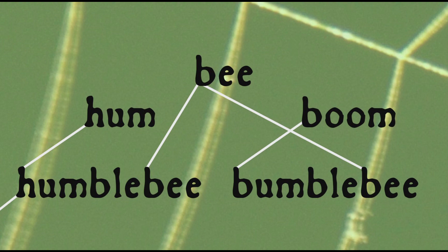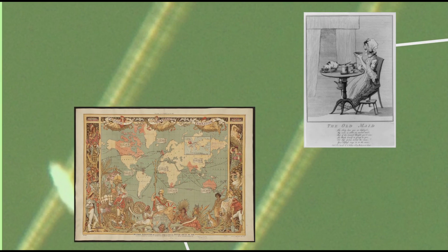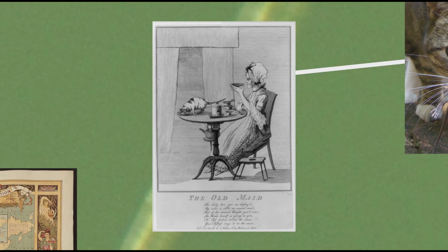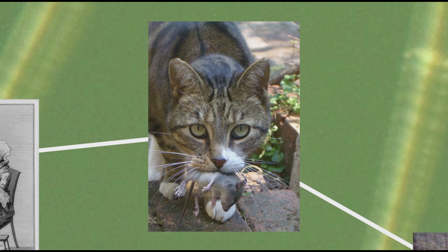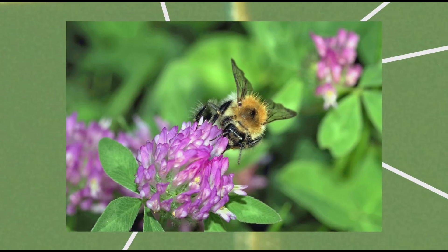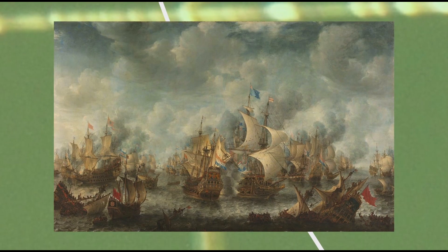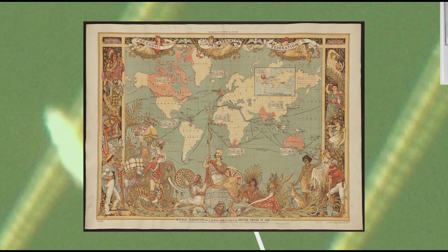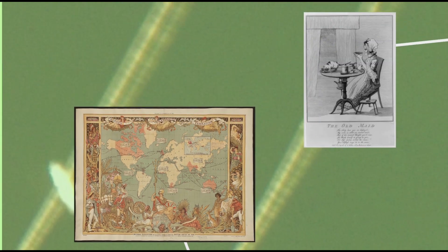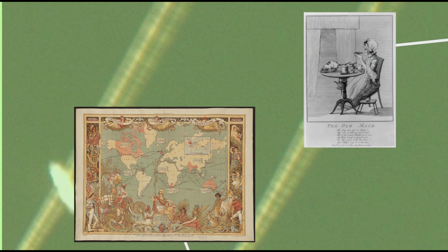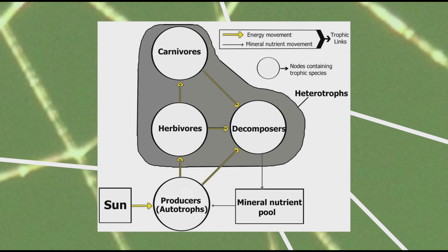Based on Darwin's chain of connections, a later commentator reasoned with tongue firmly in cheek that if it weren't for old maids the British Empire would fall, since old maids had many pet cats, who kept the field mice in check, who preyed on the bees, who pollinated the clover, which fed the cattle, which supplied the beef that fed the British sailors who protected the British Empire. Of course these kinds of complex interconnected relationships call out for graphical representations to illustrate them, so the terms food web and food chain are sometimes used to refer to these graphical representations.